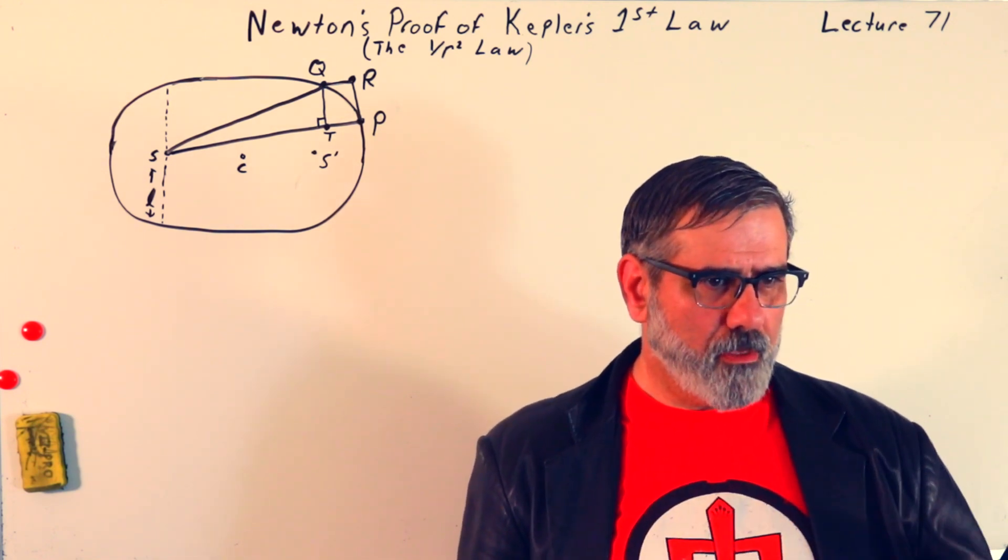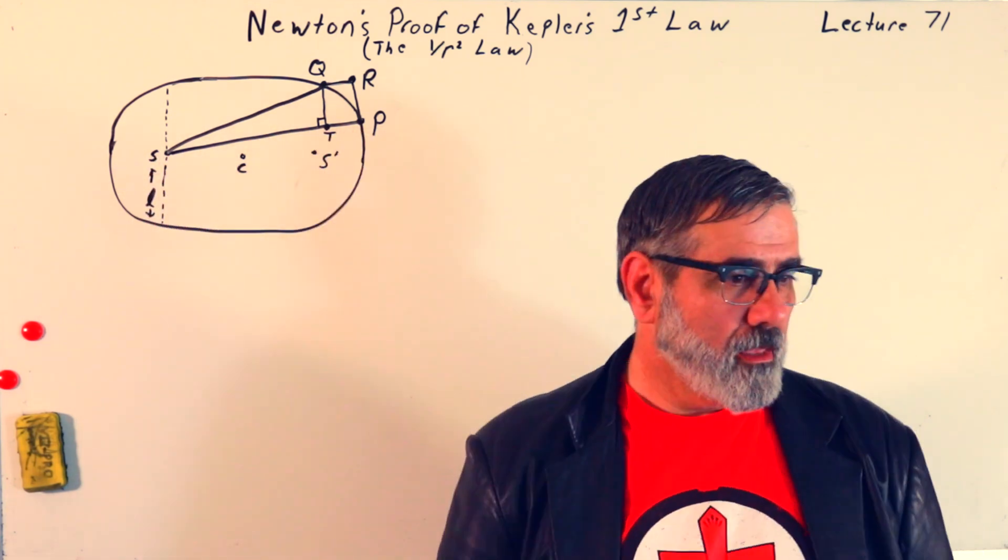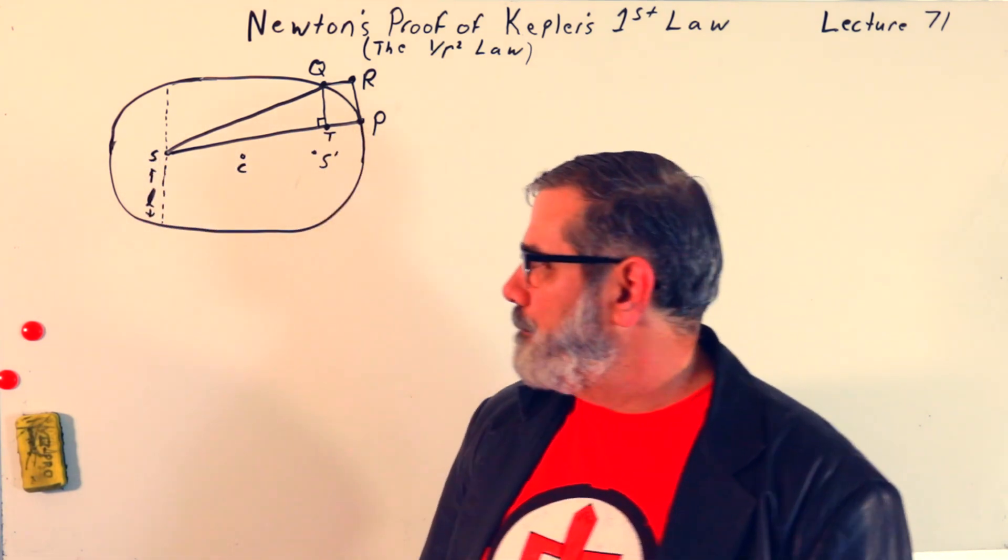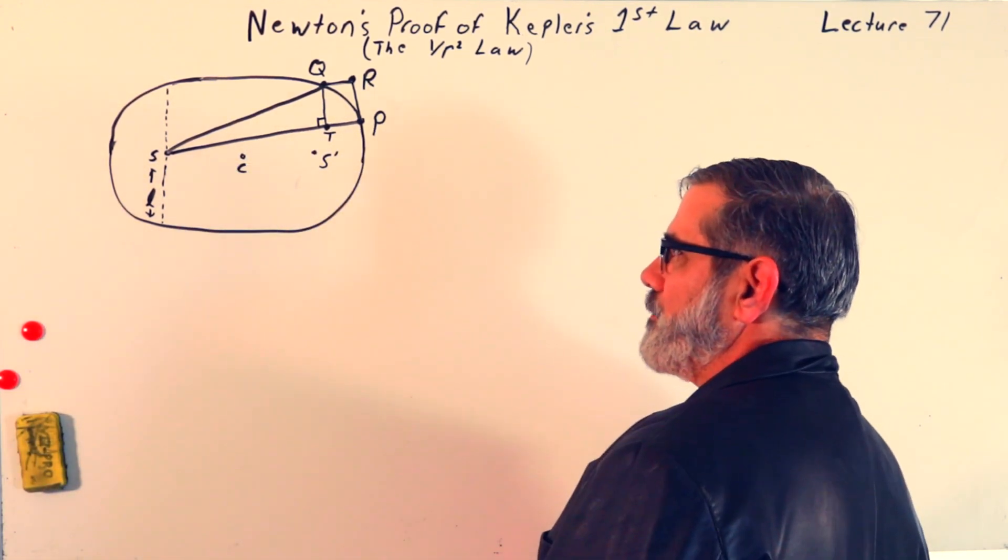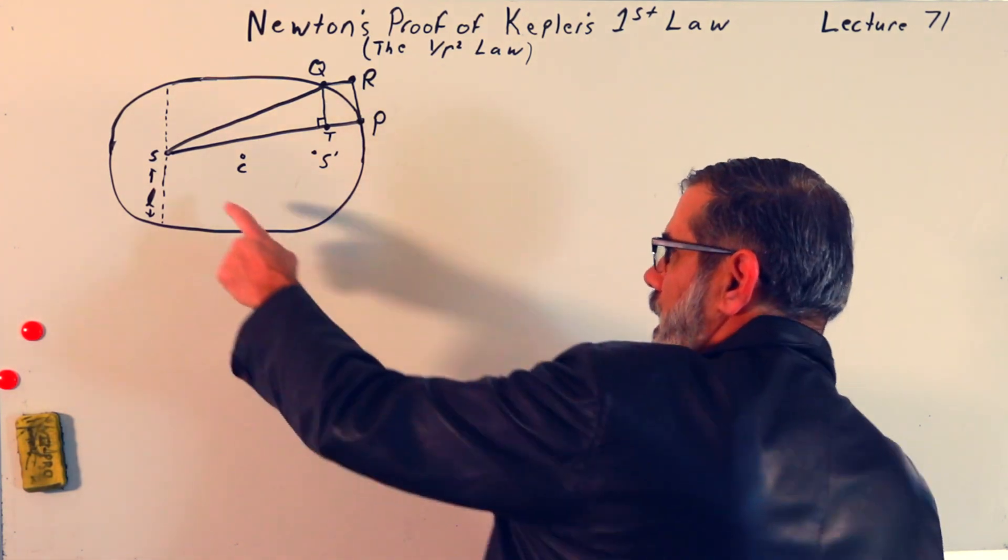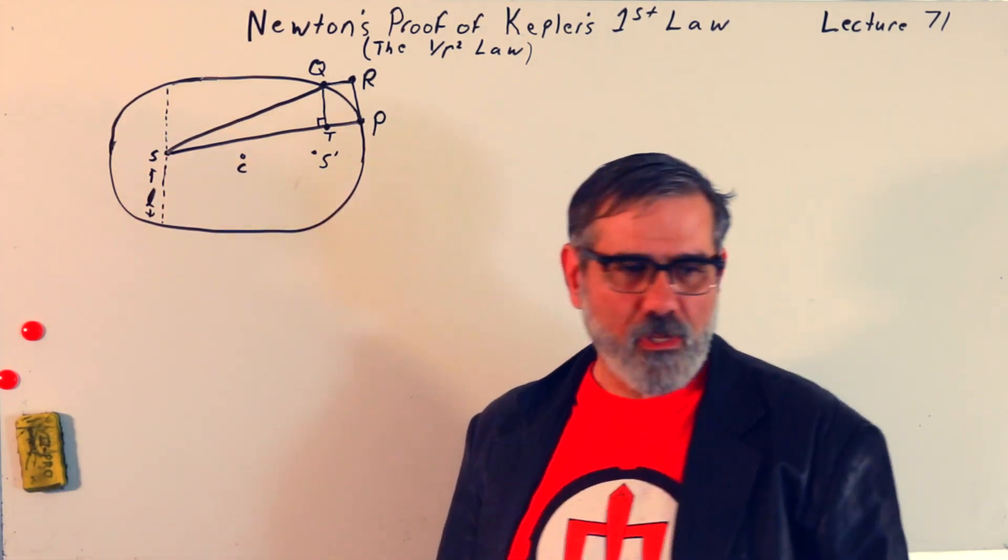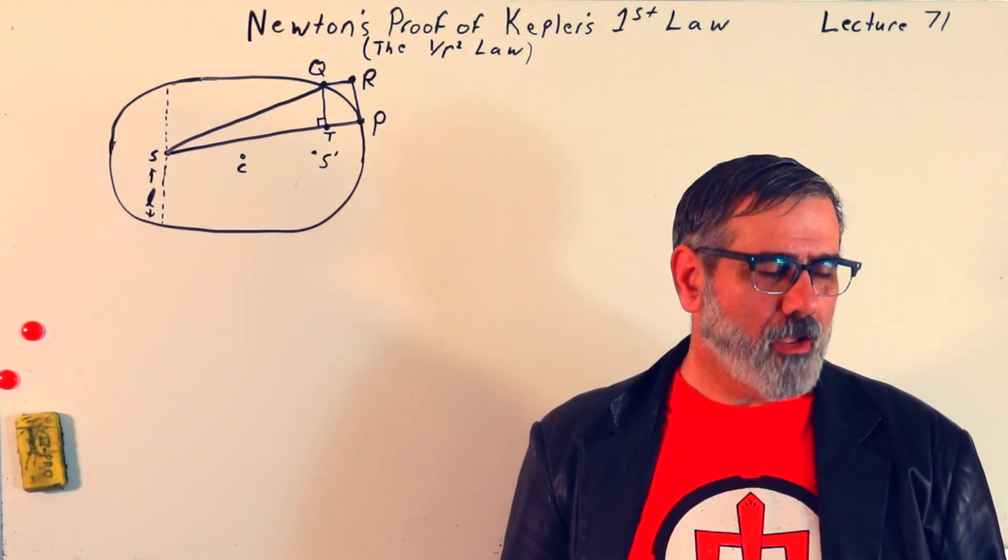And he comes to the conclusion that the centripetal force required to make those elliptical orbits is the 1 over r squared law, where r is the distance from, say, the planet to the sun, right? If we're talking about a sun and planet Earth, maybe.